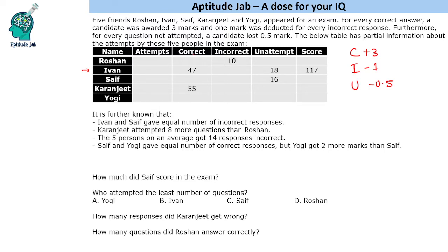If we see: 47 correct means 141 marks. 18 unattempted means minus 9. So that gives 132. But his actual score is 117, so he needs to lose 15 more marks. That means incorrect questions will be 15. So 47 correct gives 141, minus 9 from unattempted, and 15 lost from incorrect responses.